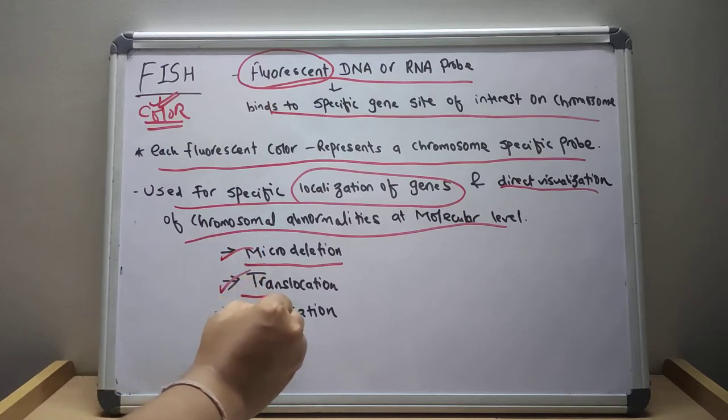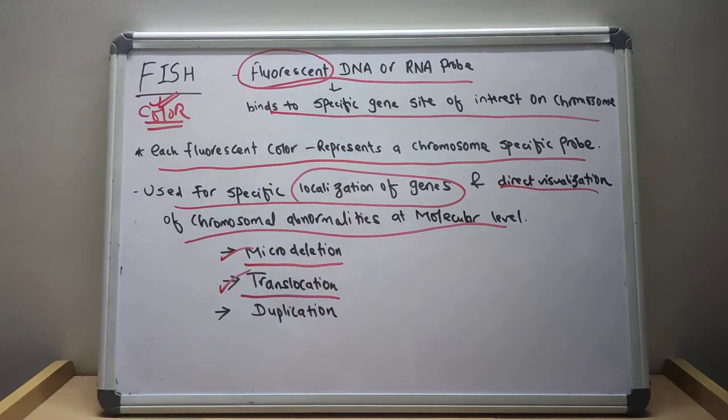In translocation, the fluorescence signal that corresponds to one chromosome is found in a different chromosome.